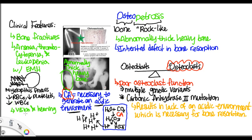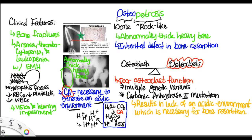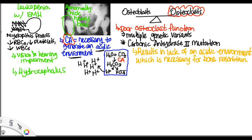Patients can also develop vision and hearing impairment. This is due to thickening of the bone that compresses the cranial nerves as they try to exit the skull. Patients present with hydrocephalus due to thickening of the bone at the foramen magnum. Patients can also develop renal tubular acidosis, which is when patients develop metabolic acidosis within the blood due to a defect in the tubules, seen with carbonic anhydrase deficiency.